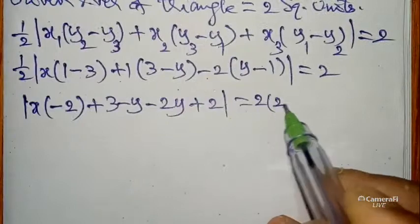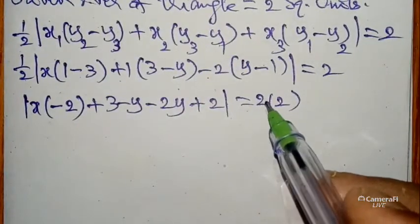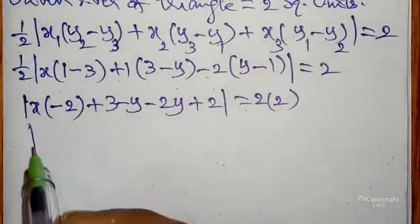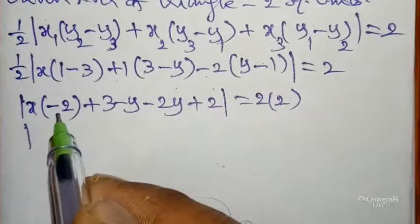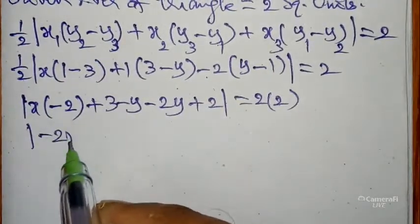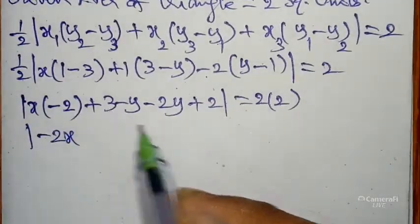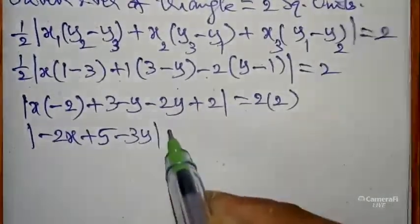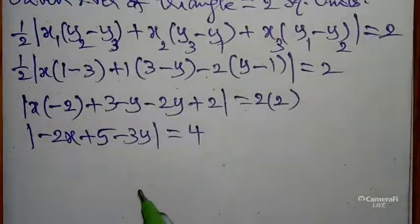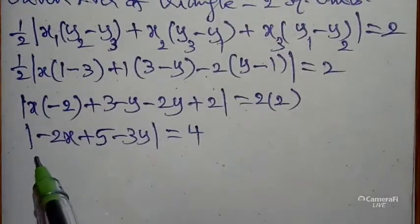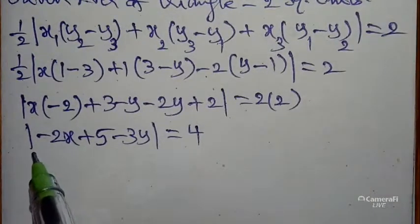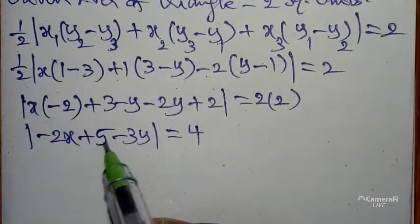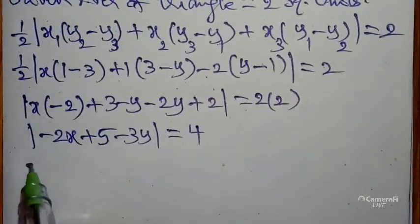Coming to the right side, multiplying with 2, so we get 2 times 2. Next, mod of -2 times x is -2x. Next, 3 plus 2 is 5 minus y, minus 2y is -3y equals 4. If you want to remove the modulus, you will get plus or minus to the right side.